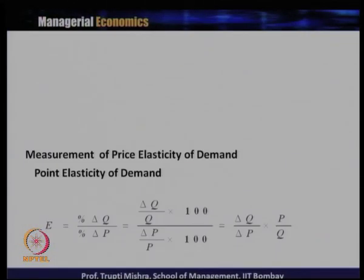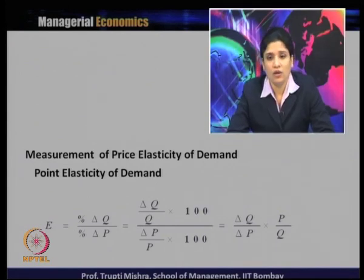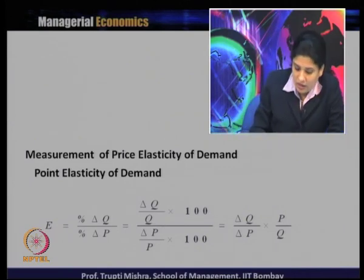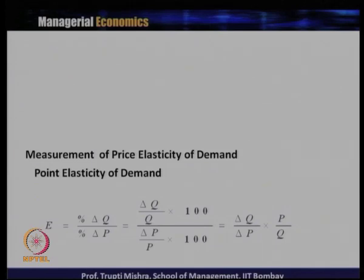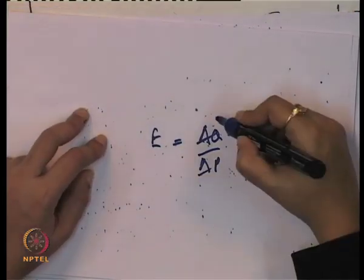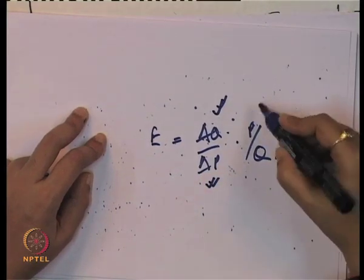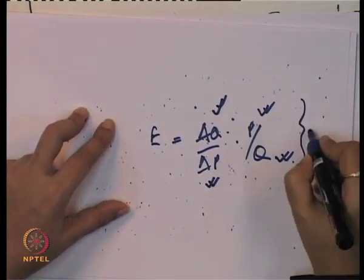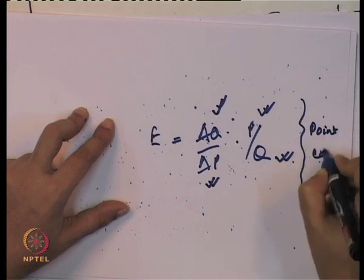In measuring price elasticity of demand, we use the formula: elasticity equals percentage change in Q divided by percentage change in price. Simplifying, that gives ΔQ/Q × 100 divided by ΔP/P × 100, which reduces to E = (ΔQ/ΔP) × (P/Q). Here ΔQ is the change in quantity demanded, ΔP is the change in price, P is the original price, and Q is the original quantity demanded. This is the formula for point elasticity of demand.